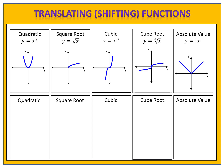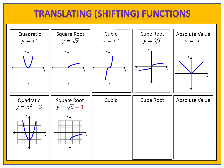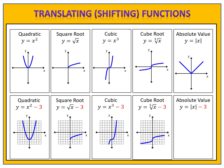The same is true if we want to shift a function down. Instead of adding a number, we will subtract a number. So y equals x squared minus 3 will shift the parabola down 3 units. The square root function y equals the square root of x minus 3 will shift the square root function down 3 units. The same is true for the cubic, the cube root, and the absolute value. If you want to shift a function downward, simply subtract that constant number from the end of the function.